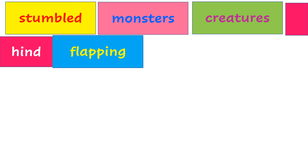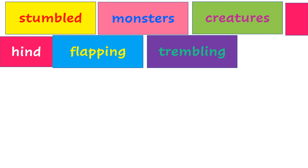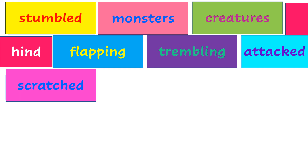Flapping — when something hits against something else it makes a flapping kind of sound, like how birds flap their wings. Shaking in fear or anger is called trembling. Attack — when you hit out at somebody. Scratched — you know what scratched means. Enough means something which is satisfactory.